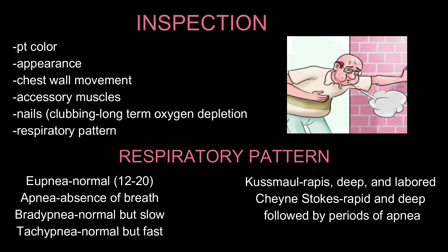Here are the respiratory patterns you should know. Eupnea is the normal respiratory pattern, which is 12 to 20 breaths per minute — how one should be breathing. Apnea is absence of breath. Bradypnea is similar to normal in that you see chest rise and fall, but it's slower — below 12 breaths per minute. This could be found when someone is sleeping or when someone overdoses. Tachypnea has a regular chest rise and fall but is much faster — more than 20 breaths per minute — and could be caused by a fever or a compensating mechanism.